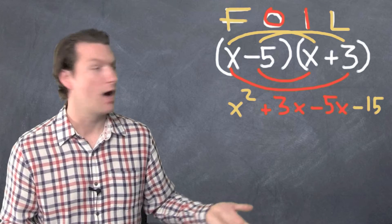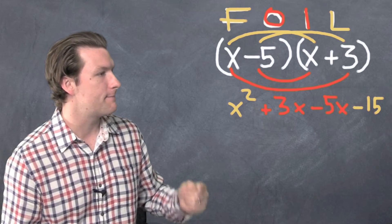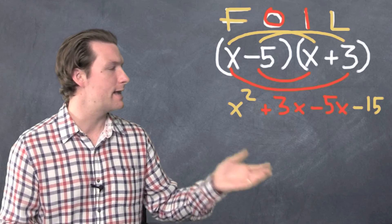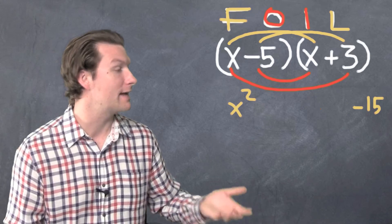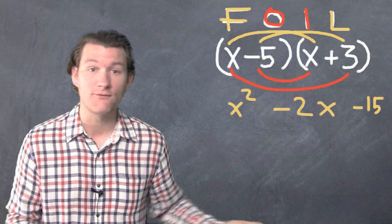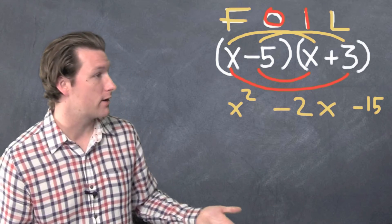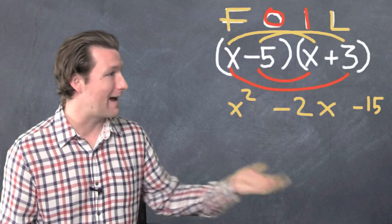We've foiled. The last thing we need to do is look. We have this positive 3X and negative 5X. We can combine those X's. That would be negative 2X. And there's our answer. We foiled. Our final answer would be X squared minus 2X minus 15.